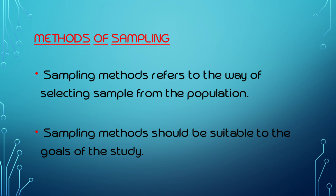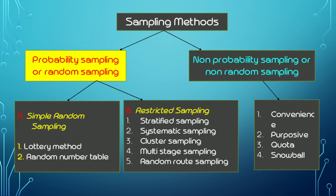Sampling methods should be suitable to the goal of the study. What are the types of sampling methods? There are two types: probability sampling and non-probability sampling. Probability sampling is random sampling, and non-probability sampling is non-random sampling.